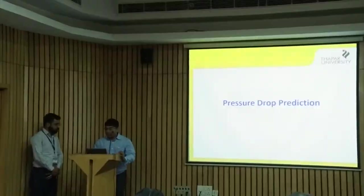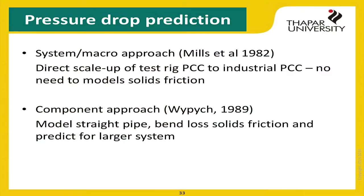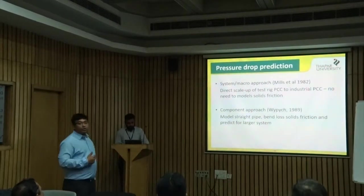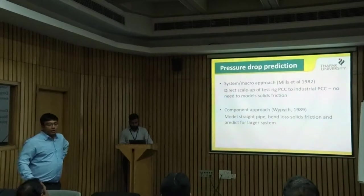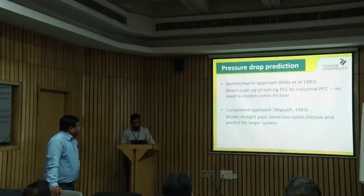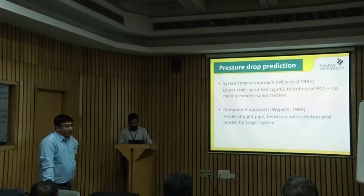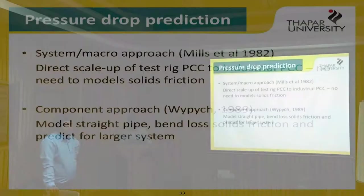We start with pressure drop prediction. There are two approaches. The first is the older approach — I thought of throwing some light on it as well, because some of you might be using it or might have heard of it. It was developed in 1982 in the UK, but it has certain problems. Sometimes you can be lucky, but many times you can have problems. It's called the system approach or the macro approach.